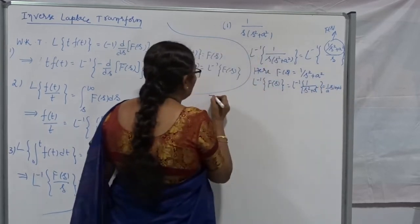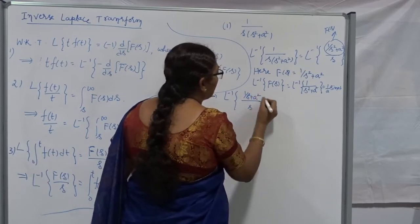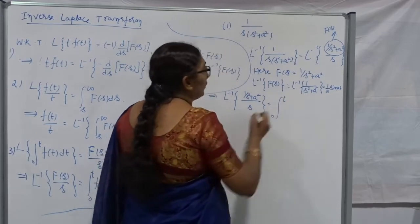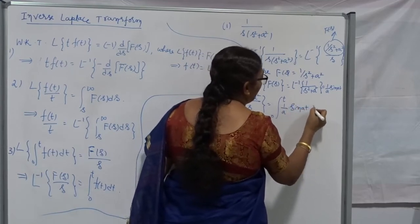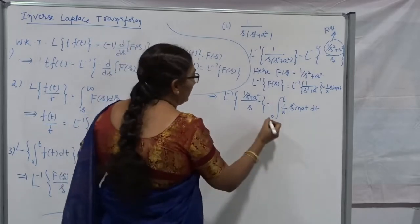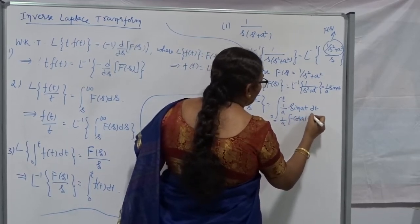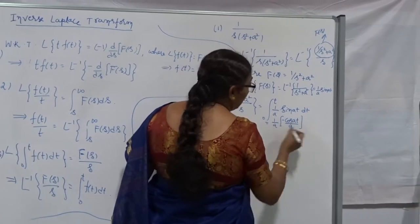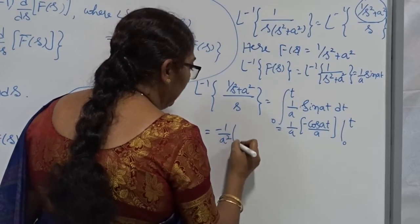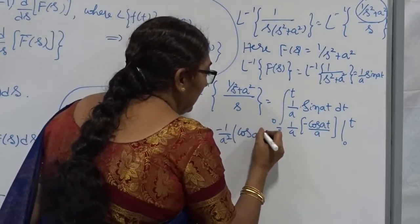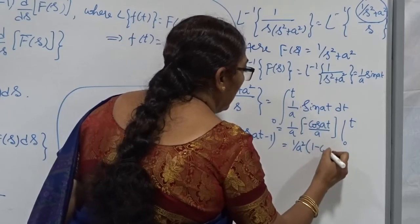This implies L-inverse of [1/(s² + a²)] divided by s is nothing but the integral from 0 to t of f(t) dt, where f(t) = (1/a)·sin(at). You know the integration of sin(at): it's (1/a) times [−cos(at)/a] evaluated from 0 to t. In the next step, −1/a² is a constant — keep it outside. Applying the limits for cos(at): minus cos(at) minus (minus cos 0), where cos(0) = 1. This can also be written as (1/a²)·(1 − cos at).